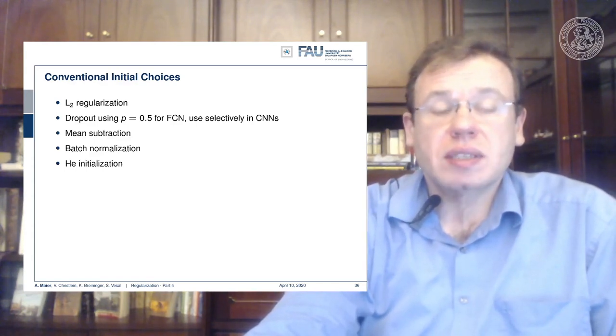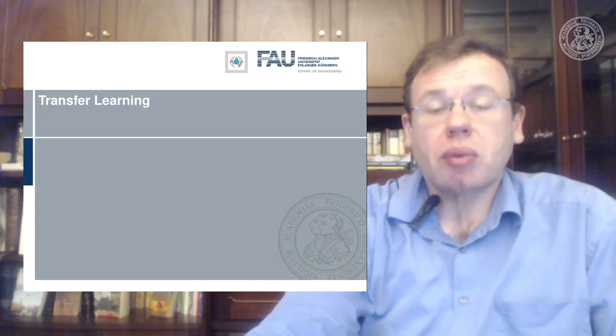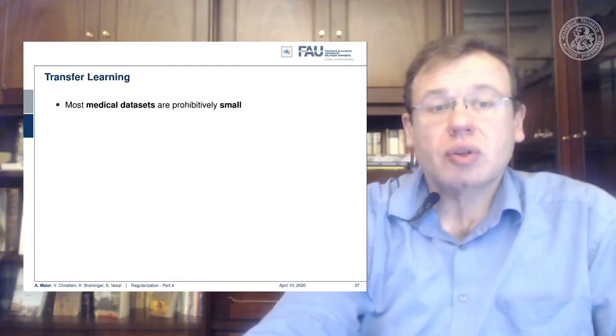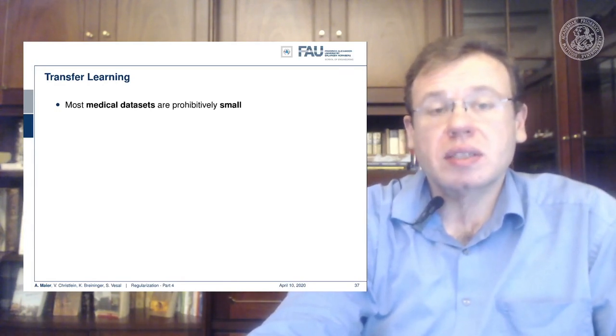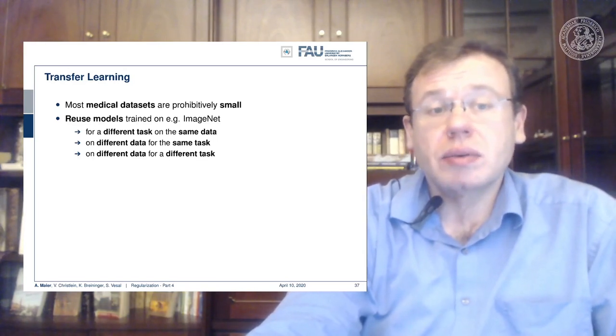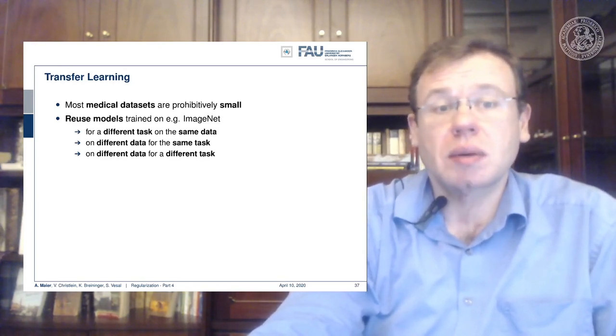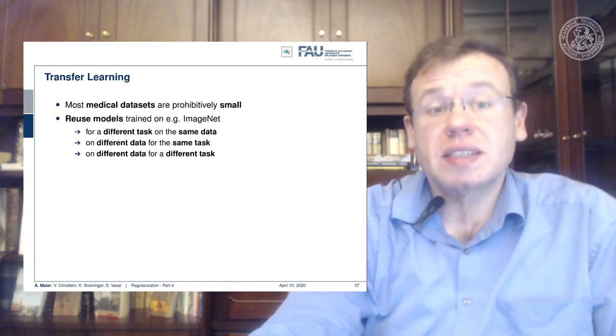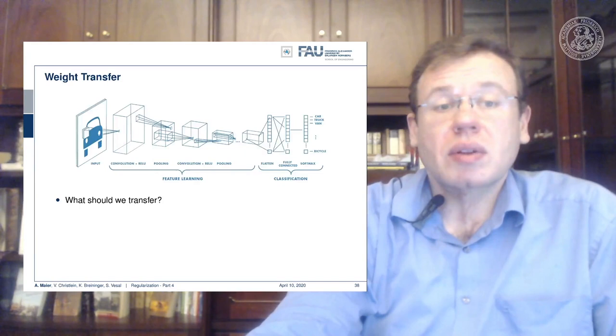So what other tricks of the trade do we have left? One important technique is transfer learning. It has been done in principle for many decades. Transfer learning is typically used in all situations where you have few data. One example are medical datasets. There you typically have very few data available. So the idea is then to reuse models trained on ImageNet, for example. You can even reuse things that have been trained on a different task for the same data. You can also use different data for the same task, or you can even do different data on a different task.